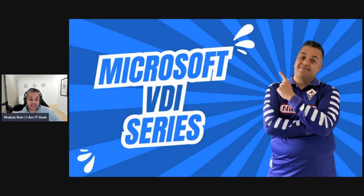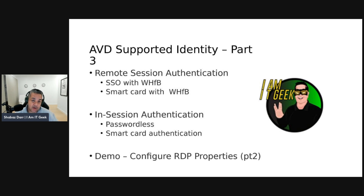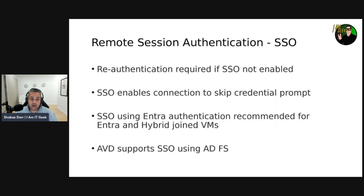Without further ado, let's get started with this episode. We are still on the Microsoft AVD topic and last episode was part two of the identity series. Today is part three - the final part - where we'll talk about remote session authentication, single sign-on with Windows Hello for Business, smart card with Windows Hello for Business, in-session passwordless and smart card authentication, and part two of configuring RDP properties including device redirection.